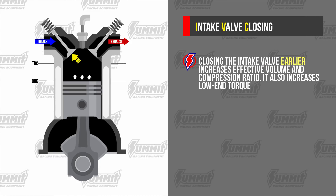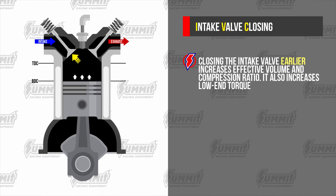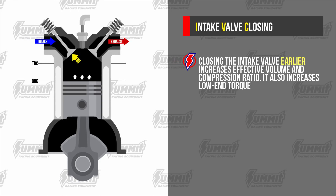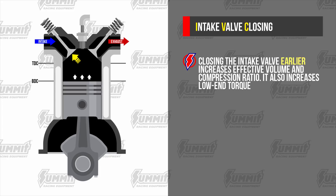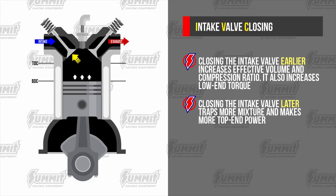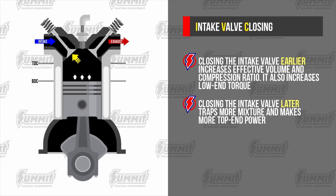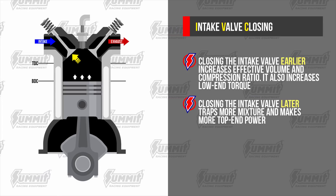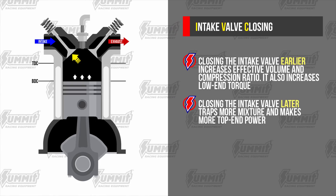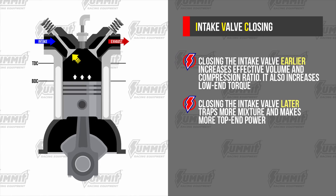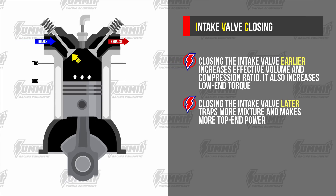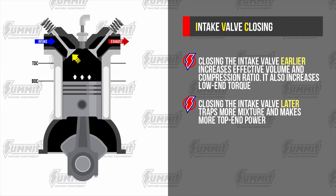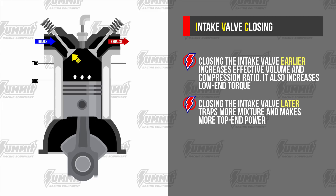Closing the intake valve earlier increases effective volume and compression ratio, which increases low end torque and makes power earlier in the power band. By closing the intake valve later, we can take advantage of the cylinder head's velocity at high RPM — we trap more air and this results in more horsepower higher in the power band. The valves are closed for most of the compression stroke and power stroke until the exhaust valve begins to open and we start all over again.